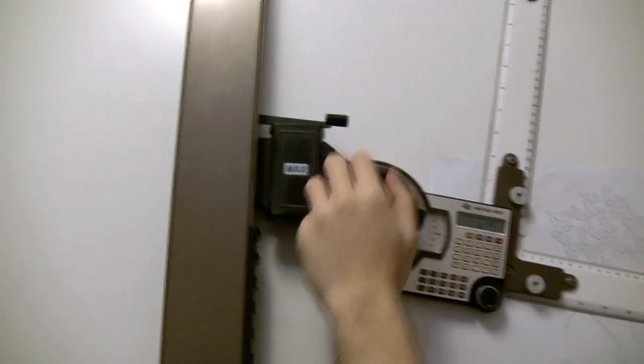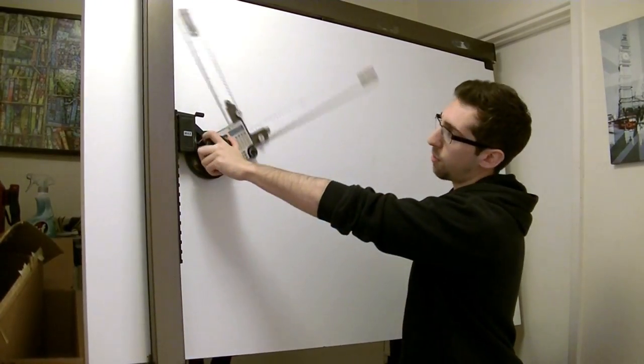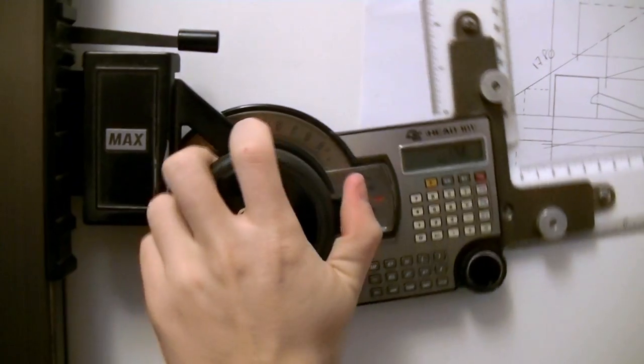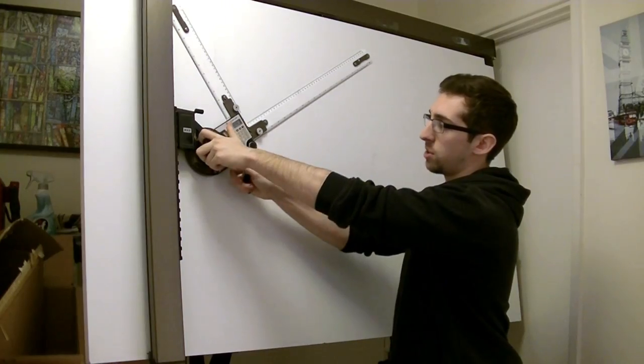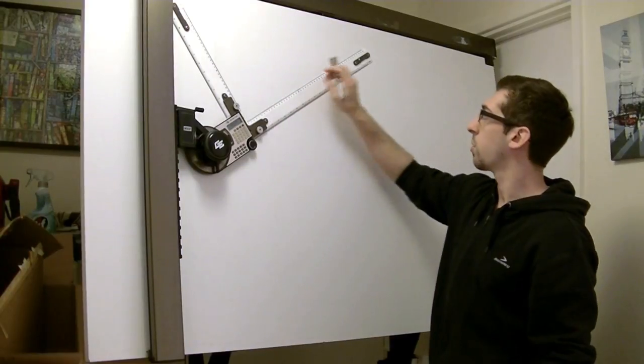The protractor has a lock as well. When you need to adjust it, just press the button and you can move it from plus 200 to minus 200 degrees. When you want to choose a position, press the button, let it go, and you maintain your 90-degree ruler with the angle you have chosen.